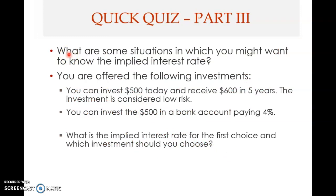We have almost completed the third part of this chapter, which is solving for the unknown interest rate. Let's do a quick review. What are some situations in which you might want to know the implied interest rate? This is when you know the future value, the present value, and the term, but you do not know the interest rate. Any situation where you know FV, PV, and the term of an investment or borrowing, but not the interest rate, falls into this category.